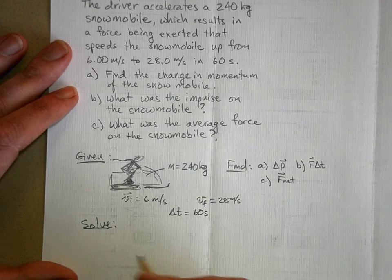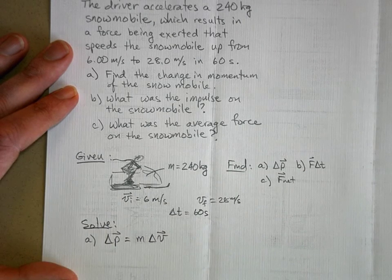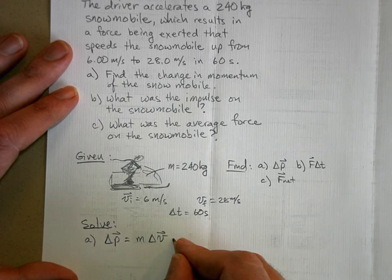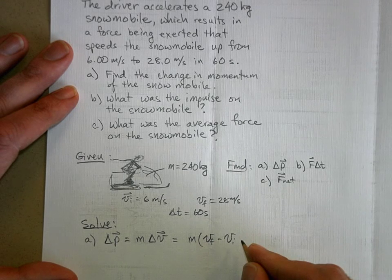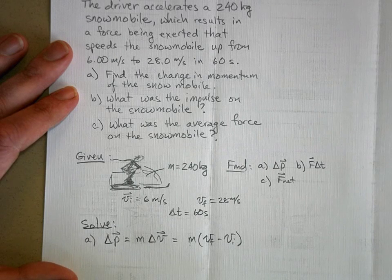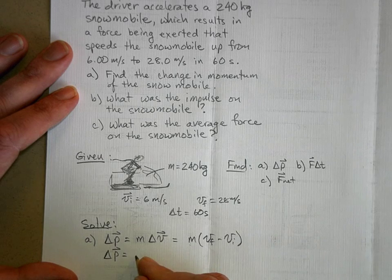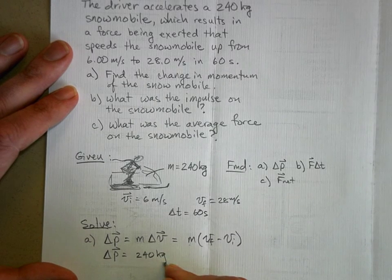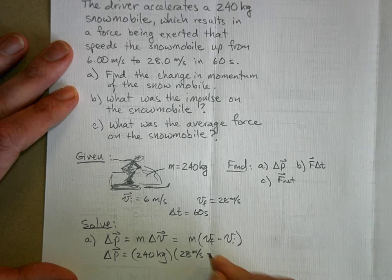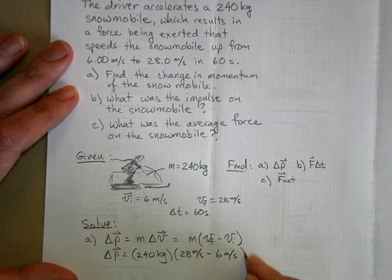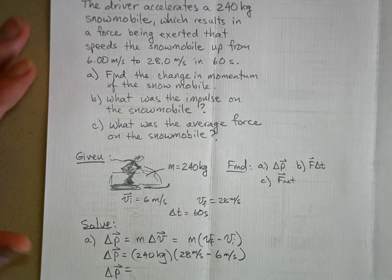And so to find the change in momentum, the change in momentum is equal to the mass times the change in velocity. Mass times change in velocity is a change in momentum, and so the mass times the final minus the initial velocity. We know all these things, they're given. And so our change in momentum is equal to the mass, which is 240 kilograms, times the final velocity, which is 28 meters per second, minus the initial velocity, which is 6 meters per second.